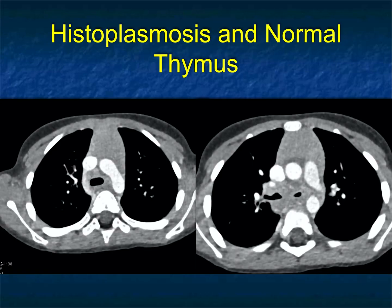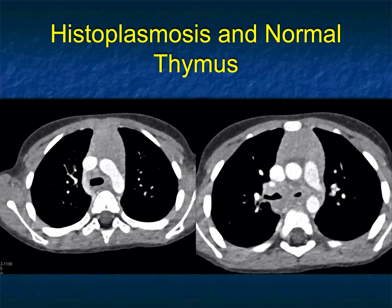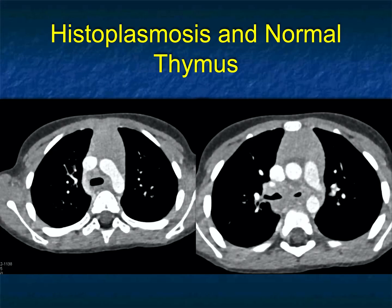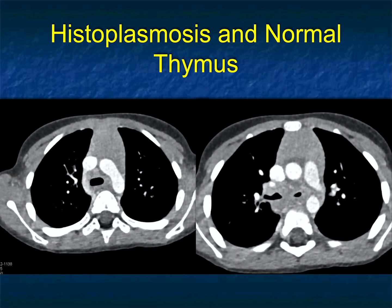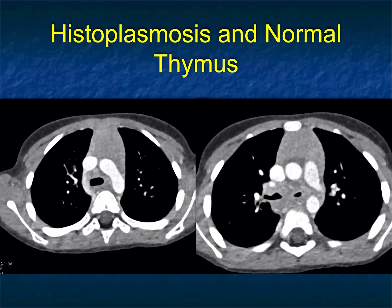If you said histoplasmosis with a normal thymus, you were correct. There are some beautiful 3D images in this case of narrowing of the airways, but the nodes with calcification and infiltration put you toward an inflammatory rather than a neoplastic process. But again, biopsy was critical.